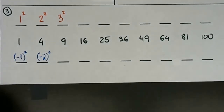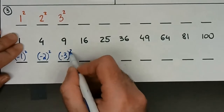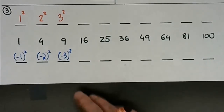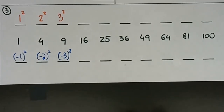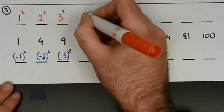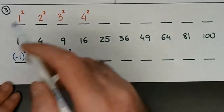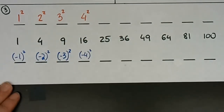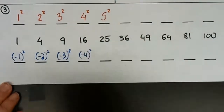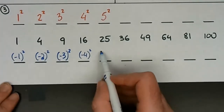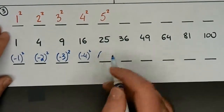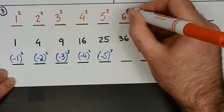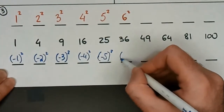For nine, three squared works — three times three is nine — as is its opposite: negative three times negative three is also nine. For sixteen, four is a good choice — four times four. It has to be two identical integers; you can get sixteen by multiplying two and eight but they're not identical. So four squared, and negative four squared works out fine because negative four times negative four is a positive sixteen. For twenty-five, five times five is the ticket — that gives us twenty-five, and the negative opposite works as well. For thirty-six, six times six which is six squared, and also its negative opposite.